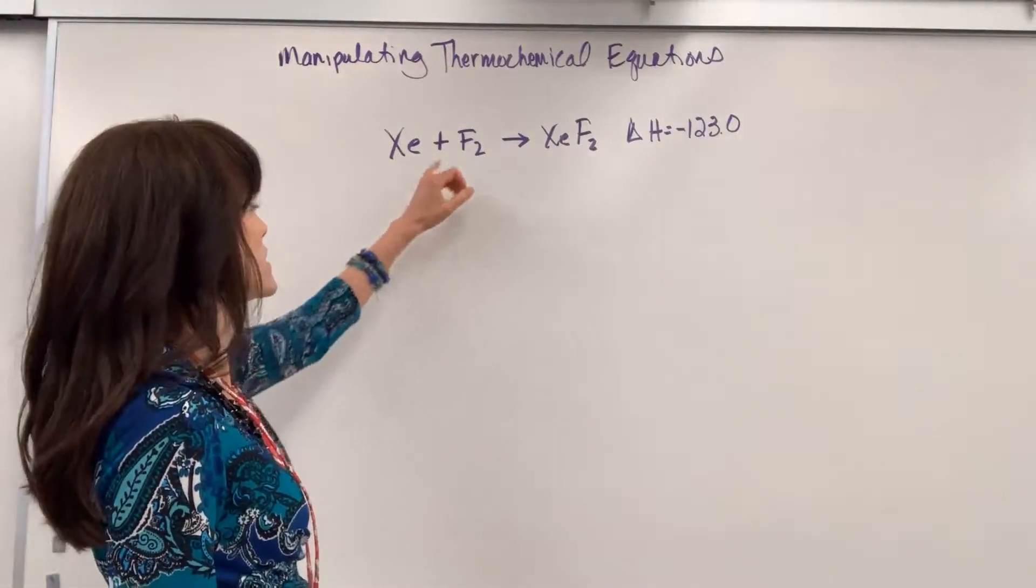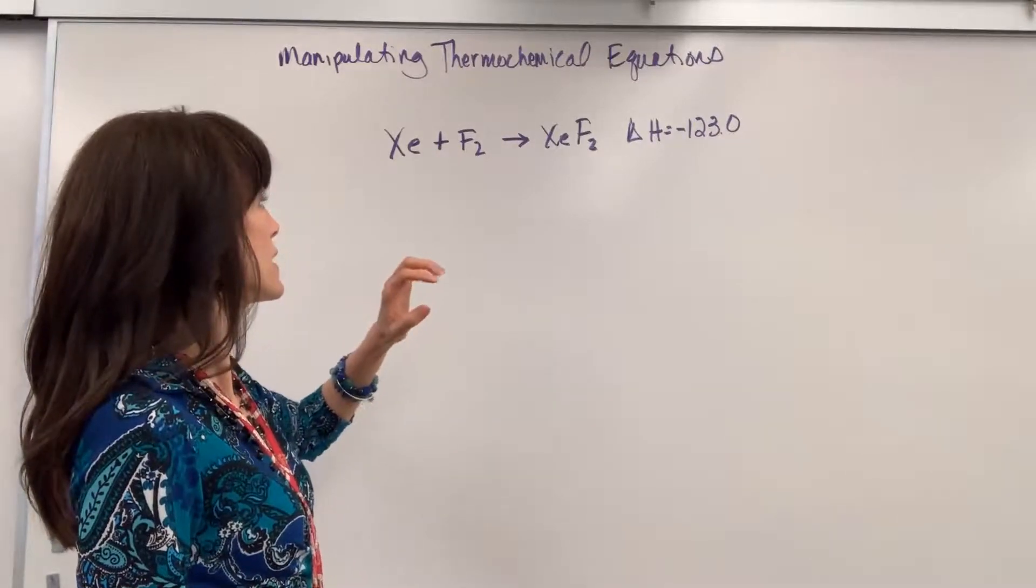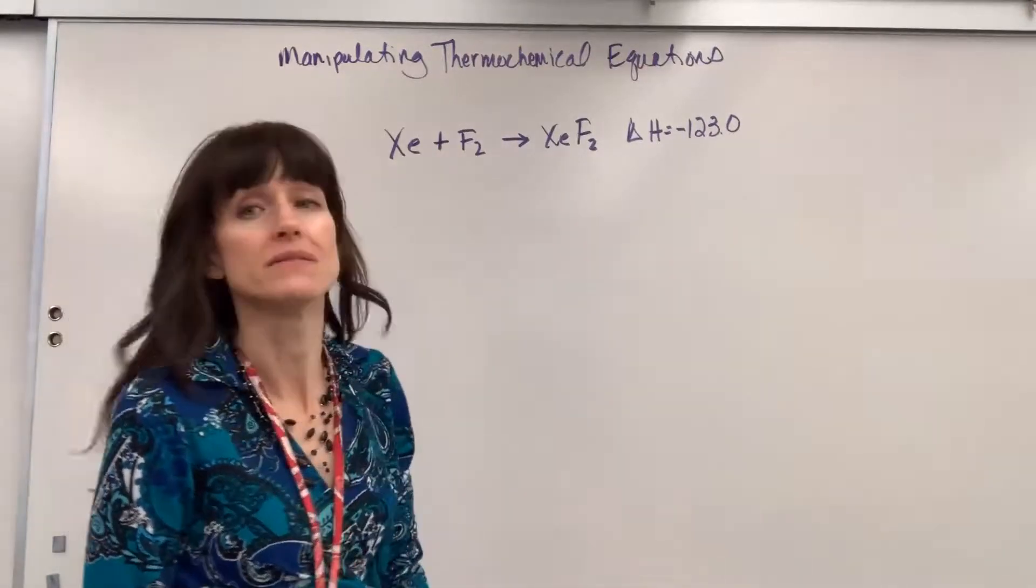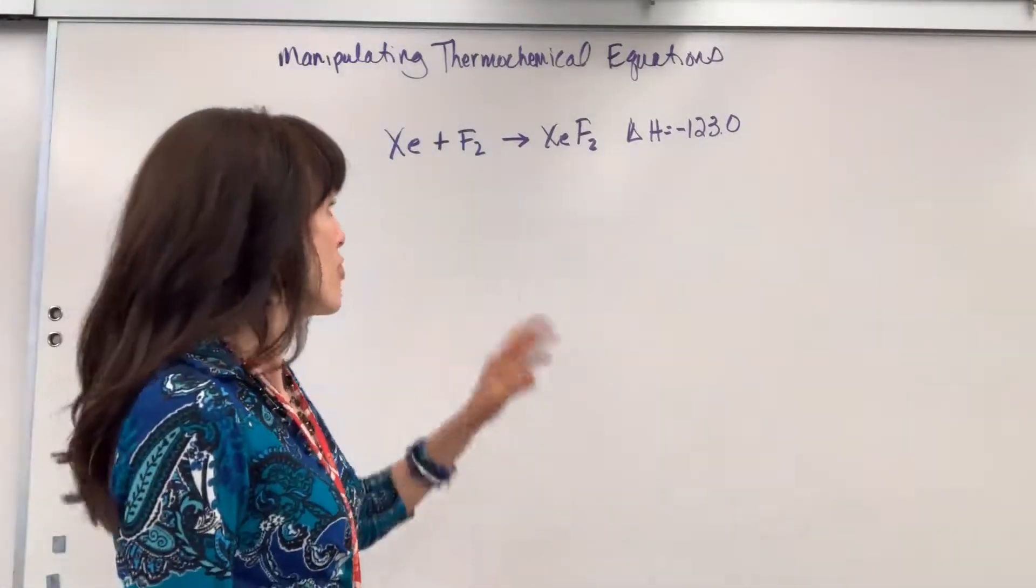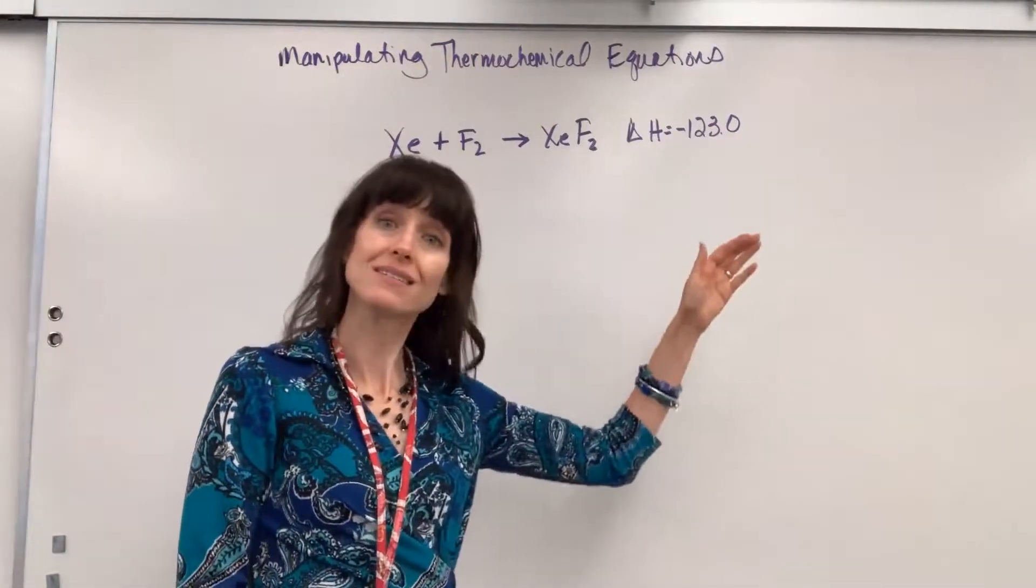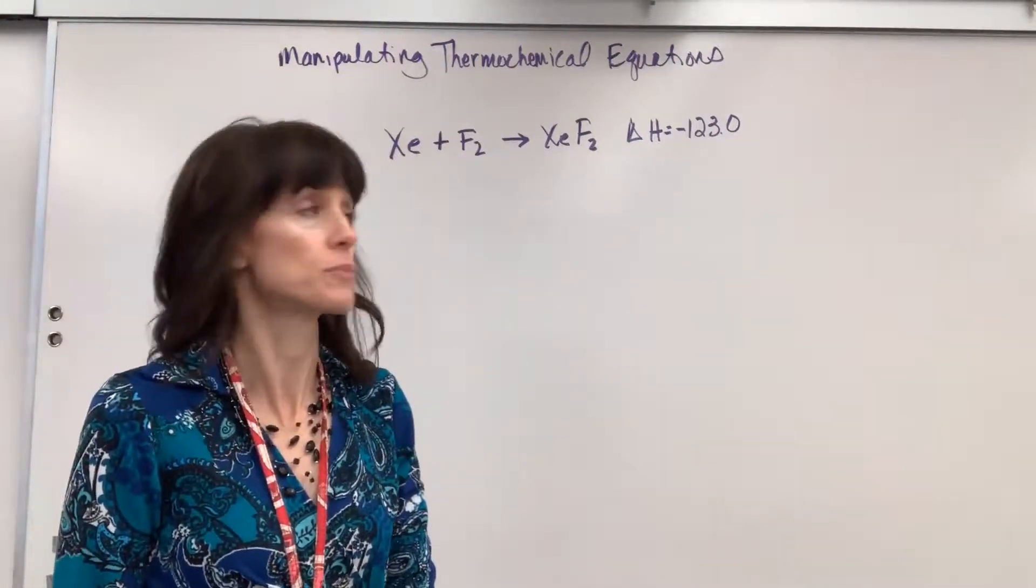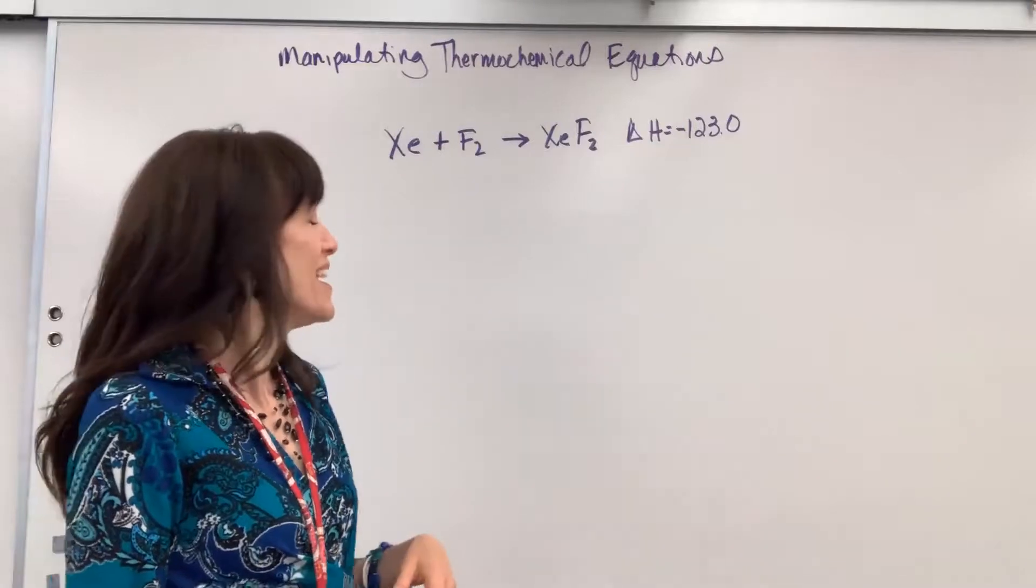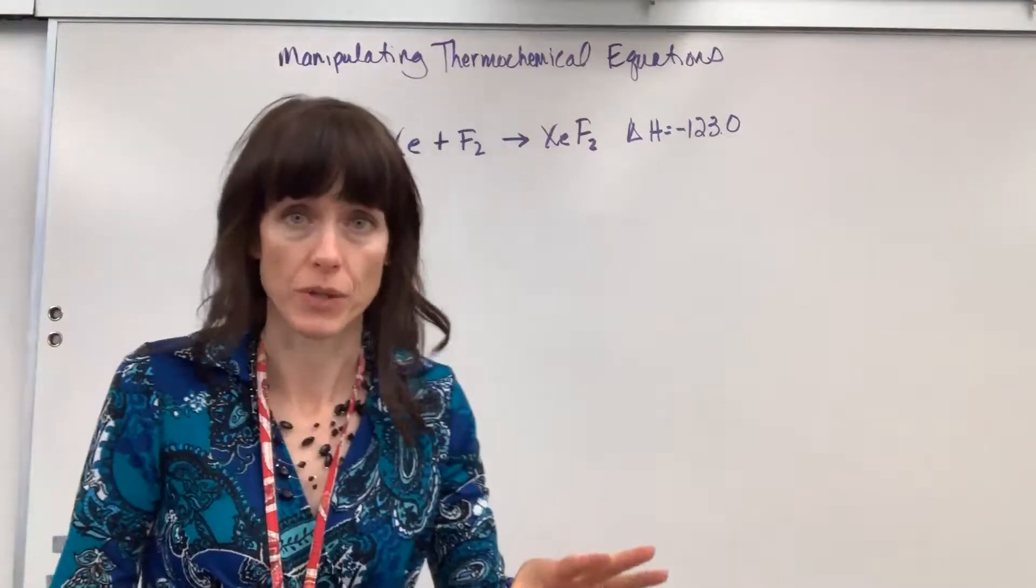This tells us if we have one mole of xenon plus one mole of fluorine, it is going to produce one mole of xenon difluoride. This reaction releases 123 kilojoules per mole. It's exothermic.